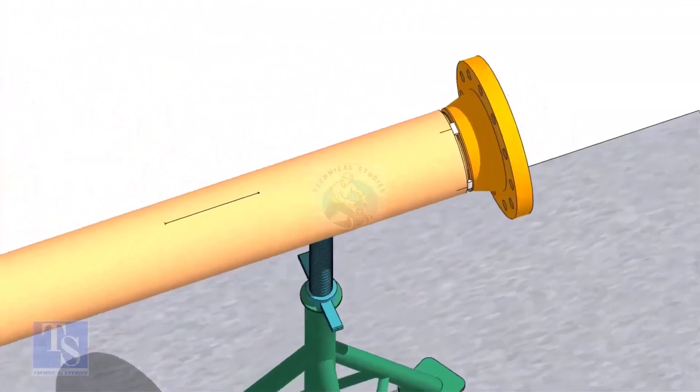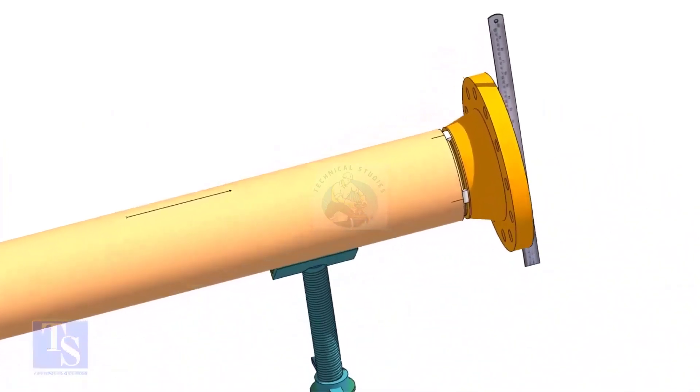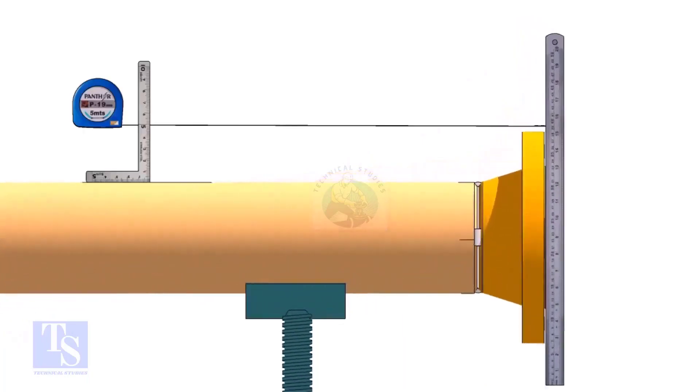Hold a steel ruler on the face of the flange vertically. Put a right angle on the pipe where the line is drawn. Move the right angle until the edge comes on 595mm on the tape.